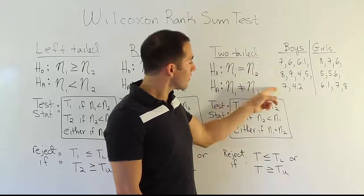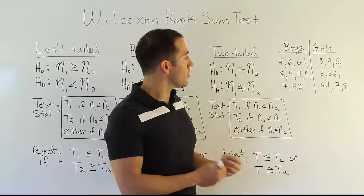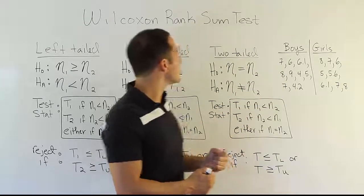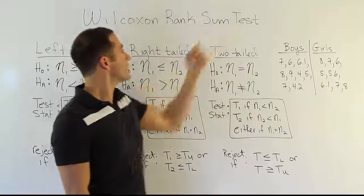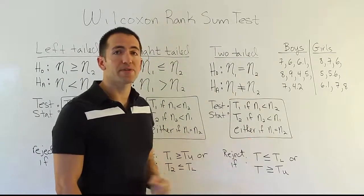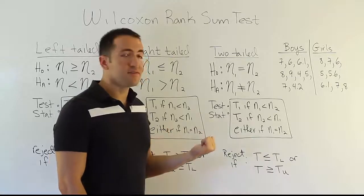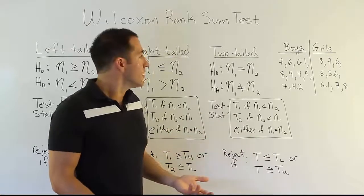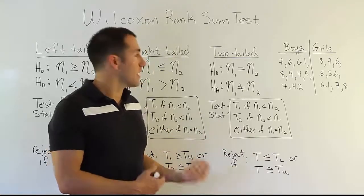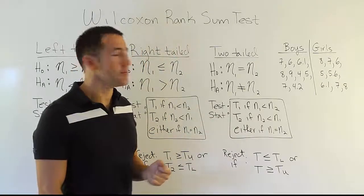The idea behind this procedure is essentially to make a comparison between two independent populations, and that's what the Wilcoxon Rank Sum test does for us. It's the non-parametric version of the independent t-test. The independent t-test could have been used if we could assume normality. If we can't assume normality, we might try the Wilcoxon Rank Sum test to be safe.